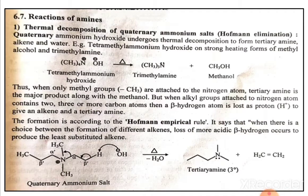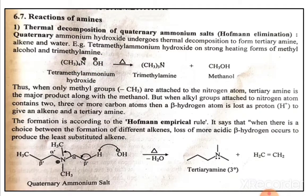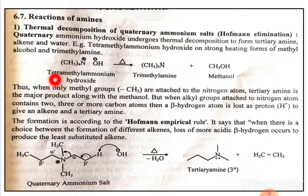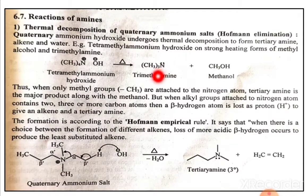Number one: the thermal decomposition of quaternary ammonium salts, that is, Hoffman elimination. The quaternary ammonium hydroxide undergoes thermal decomposition to form tertiary amine, alkene, and water. For example, tetramethyl ammonium hydroxide — where nitrogen is attached to four methyl groups — upon strong heating gives trimethylamine plus methanol as a byproduct.